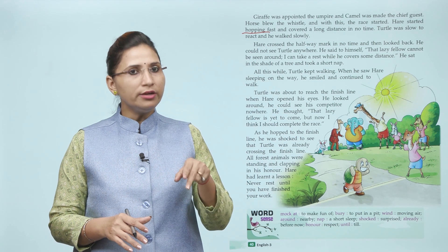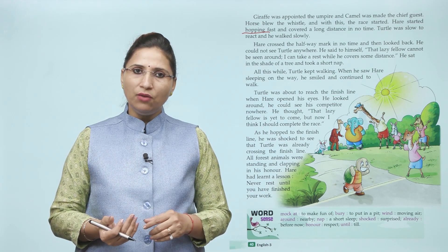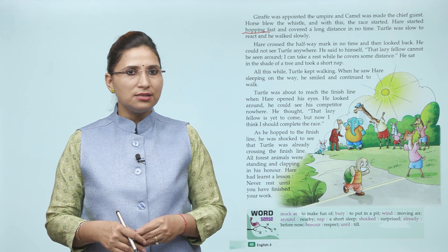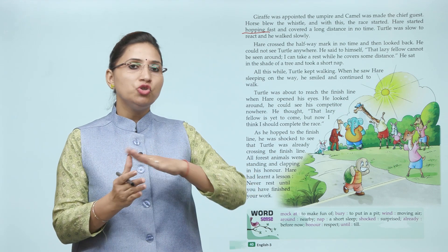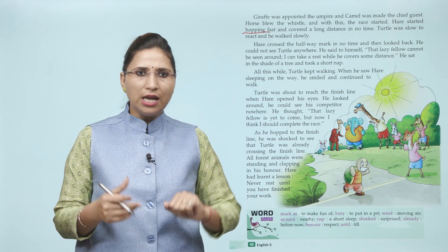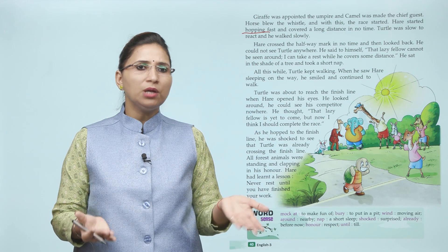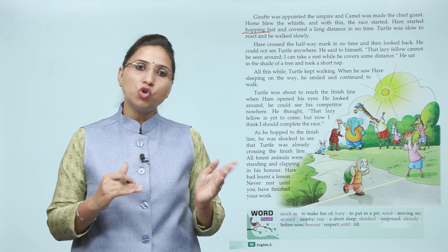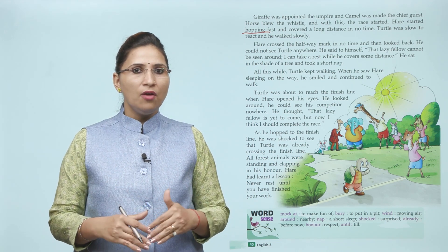Turtle was slow to react and he walked slowly. Hare crossed the halfway mark in no time and then looked back — he could not see turtle anywhere. He said to himself, 'The lazy fellow cannot be seen around. I can take a rest while he covers some distance.' He sat in the shade of a tree and took a short nap. Turtle kaafi slow tha. Hare ne almost half race finish kar di, peeche dekha to turtle nazar hi nahi aaya. Ped ki chhaon mein baith ke short nap lene lag gaya.